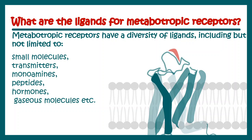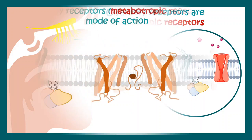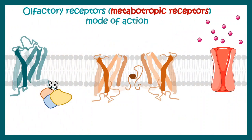We can see metabotropic receptors in our nose, in our olfactory system. All the olfactory receptors are actually metabotropic receptors. Here we are seeing a portion of the olfactory epithelium. There are ligands — maybe a gaseous ligand — which can bind to the olfactory receptor marked here in green. This ligand binding triggers a G-protein coupled receptor response.